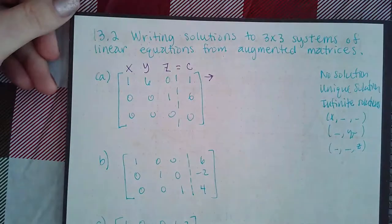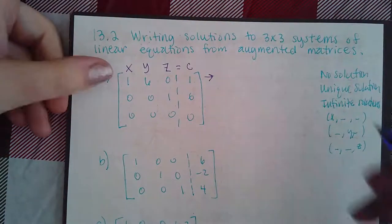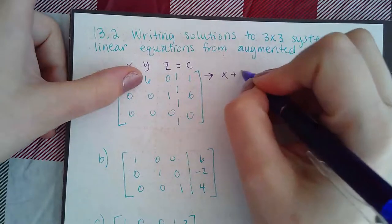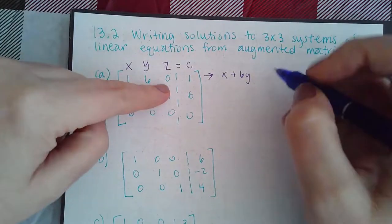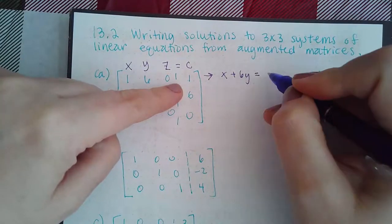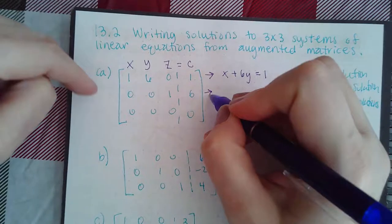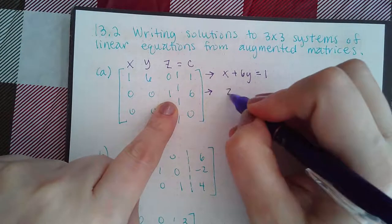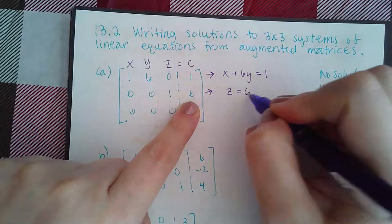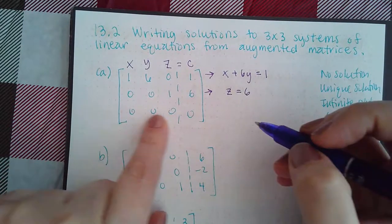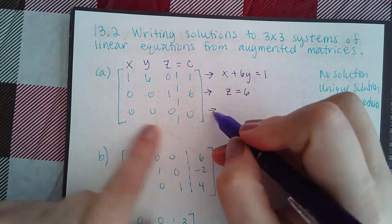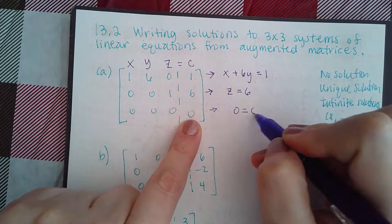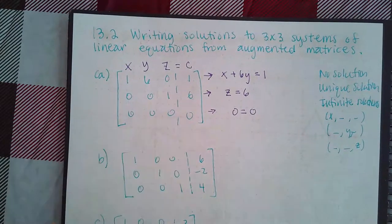So this becomes 1x + 6y with no z's equal to 1. This equation becomes no x's, no y's, but a single z equal to 6. This is nothing—you have basically nothing on the left hand side and then nothing on the right hand side.